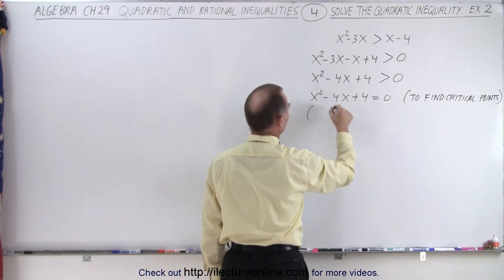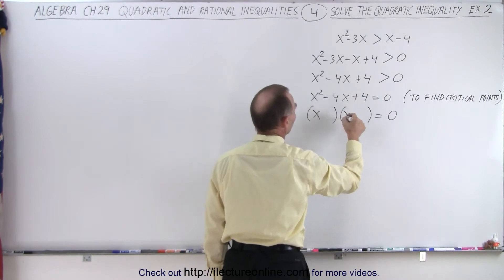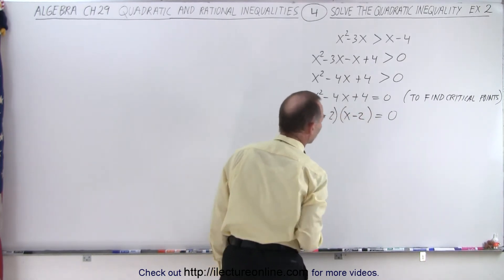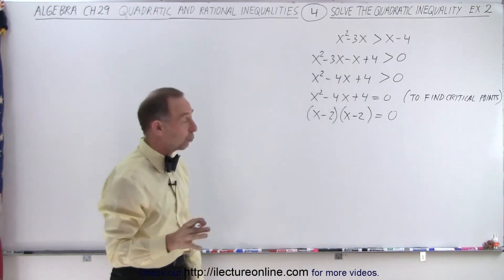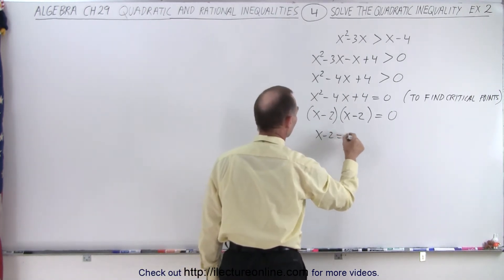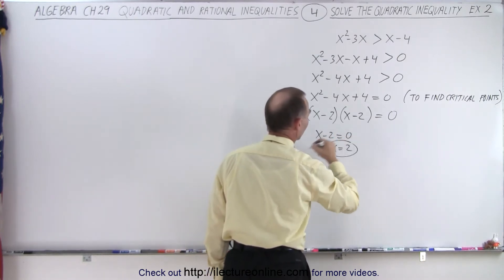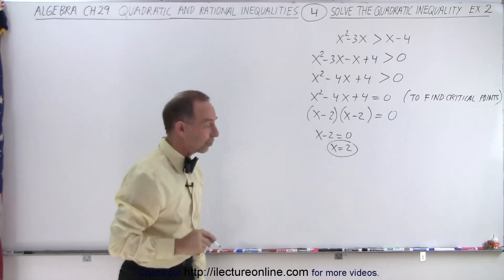So now let's find the critical points. Can we factor this? Let's see if we can. We have an x and an x. The symbols are negative and negative, and 2 and 2. In this case, it looks like we only have one critical point. We can say that x minus 2 equals 0, and therefore x equals 2. So we can see there's only one single critical point.